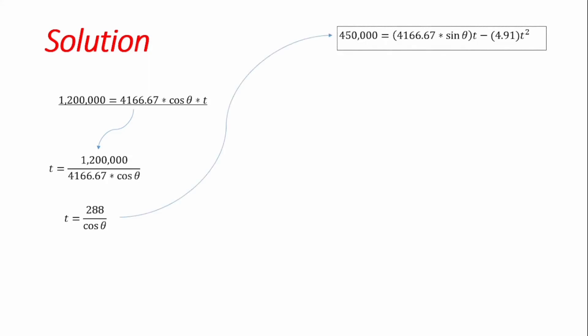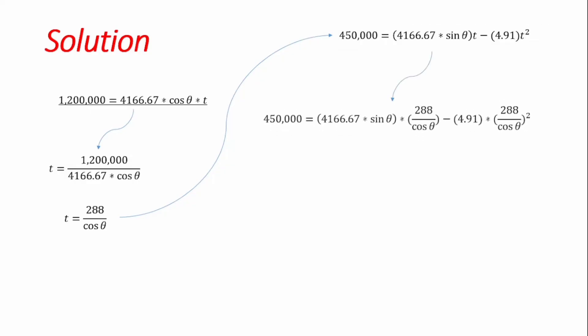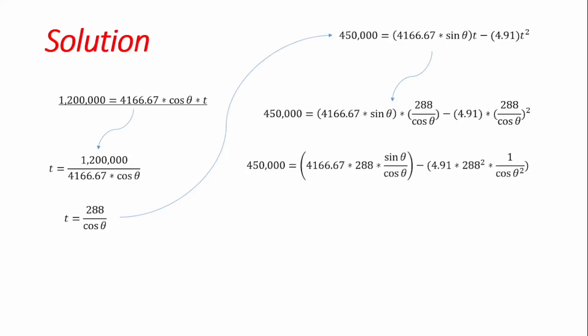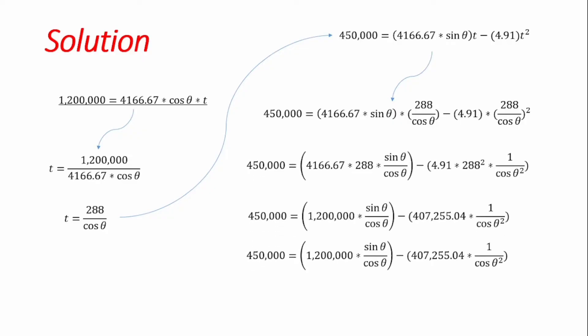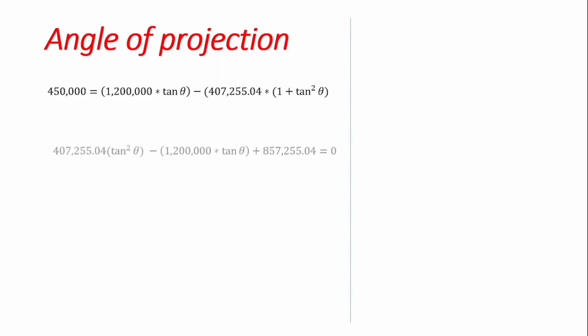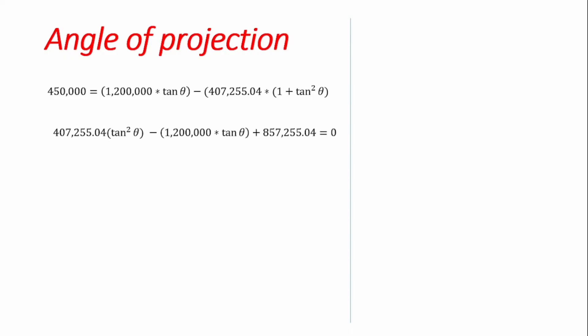Substituting t = 288/cosθ into Equation 2 and simplifying, we obtain an equation containing tanθ and tan²θ. This can be rearranged into a quadratic equation where the unknown is tanθ. Letting x = tanθ, we solve using the quadratic formula or any suitable method.